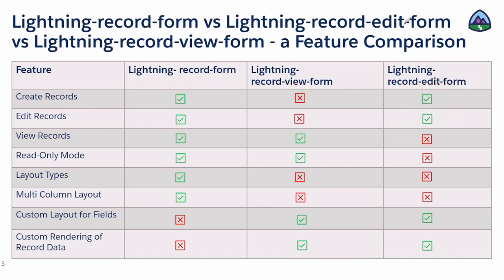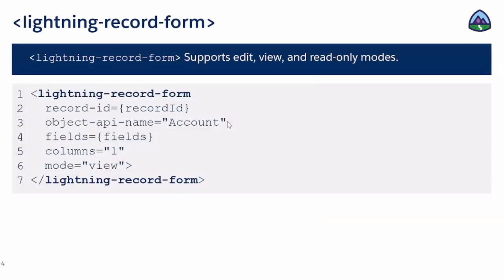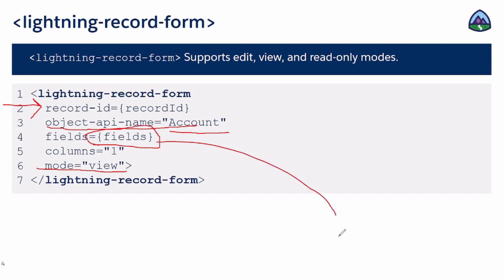Here is an example of record form — I'm reading data because my mode is view. I'm passing which record ID I want to read, which object, and which fields. So you can decide the fields from the JavaScript. Or if you don't want to choose a field, you can choose the layout type and the mode.